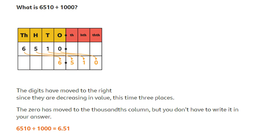When I divide by 1000, I will move three places on the place value chart. 6000 divided by 1000 will equal 6 — I have moved one, two, three places, and all the digits afterwards will move three places as well. So my final answer is 6.51. Notice when I've written the answer, I haven't included the zero. I don't need to write it because it is after the decimal point and it holds no value.